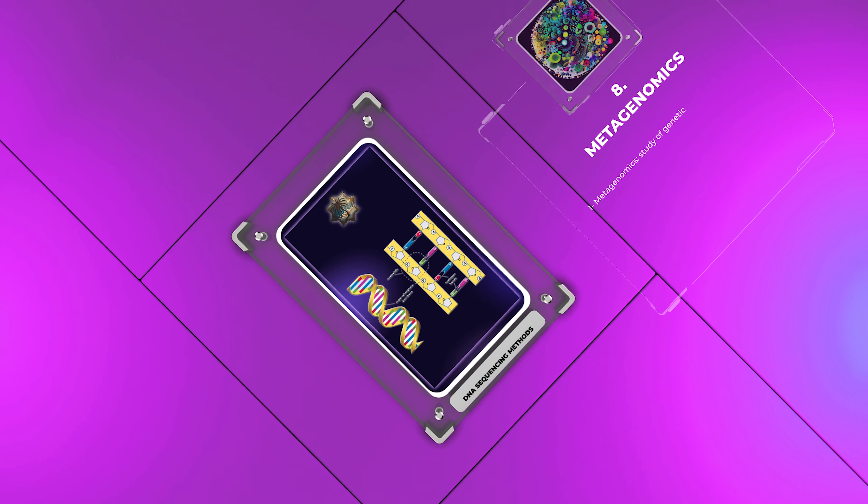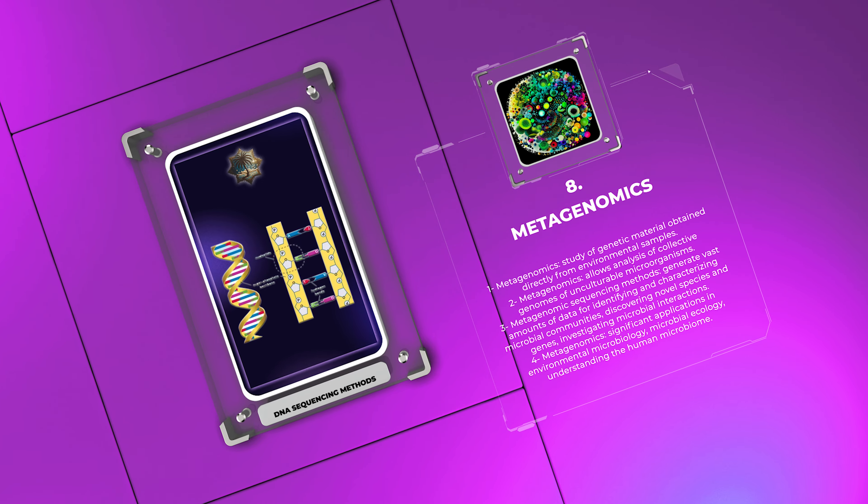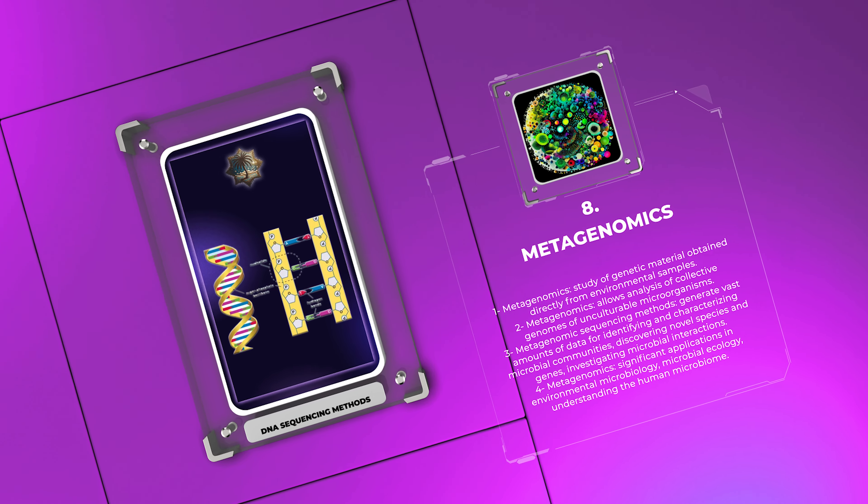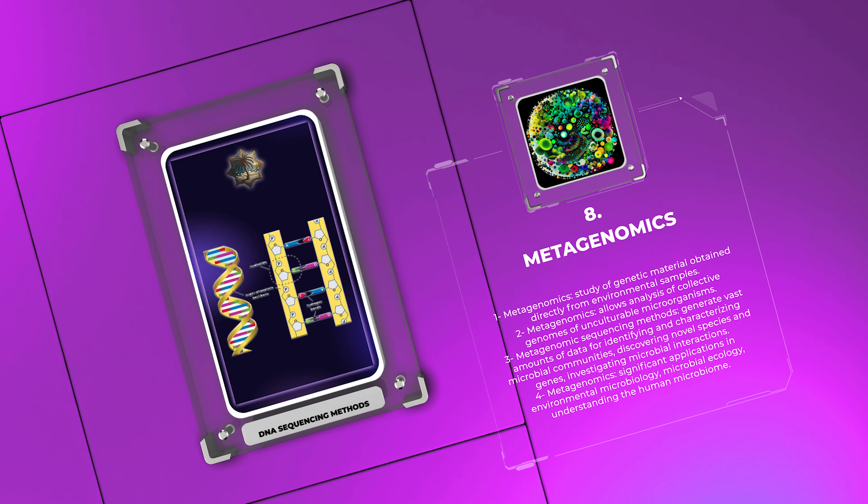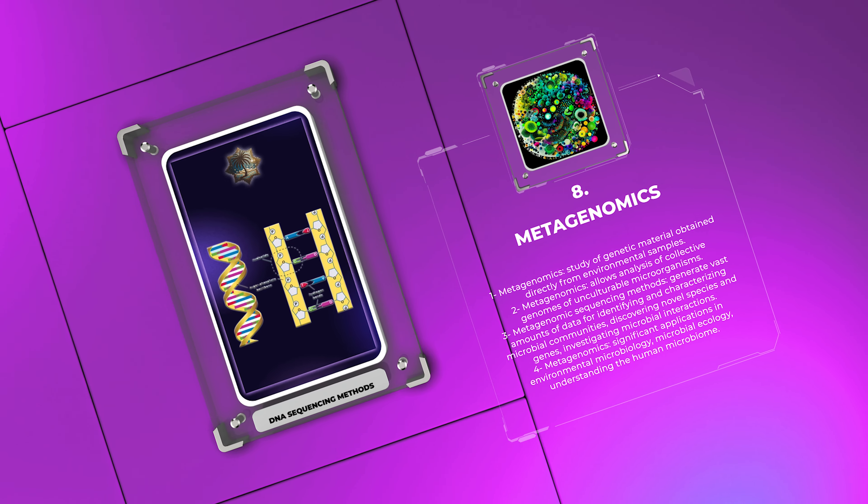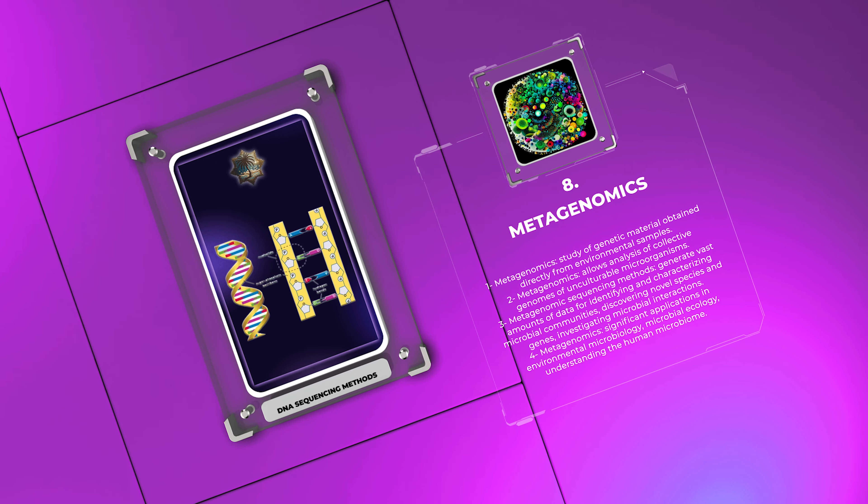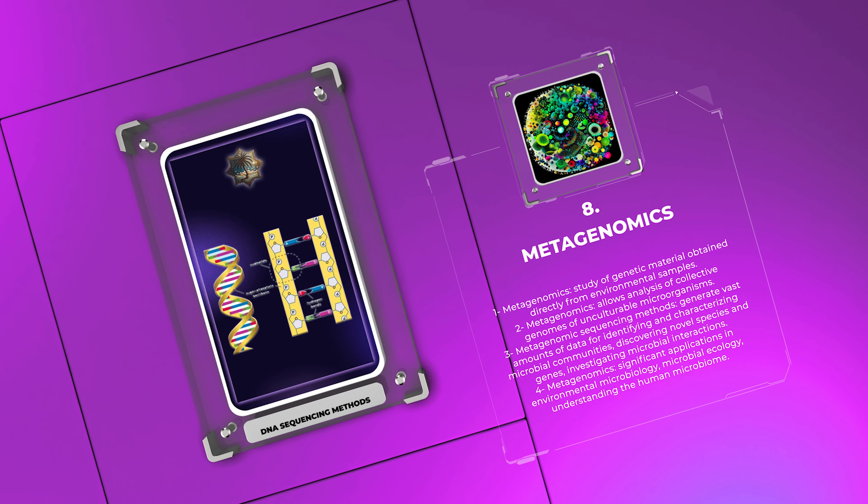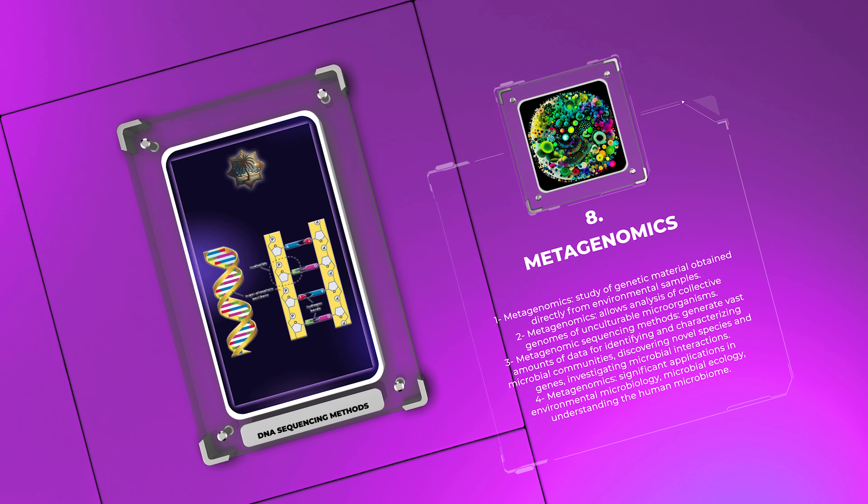Metagenomics involves the study of genetic material obtained directly from environmental samples, such as soil, water, or the human gut. This approach allows researchers to analyze the collective genomes of unculturable microorganisms in a given ecosystem. Metagenomic sequencing methods generate vast amounts of data that can be used to identify and characterize microbial communities, discover novel species and genes, and investigate microbial interactions. Metagenomics has significant applications in fields like environmental microbiology, microbial ecology, and understanding the human microbiome.